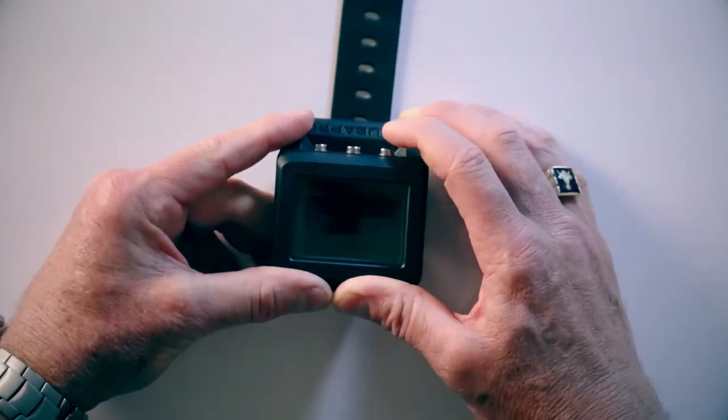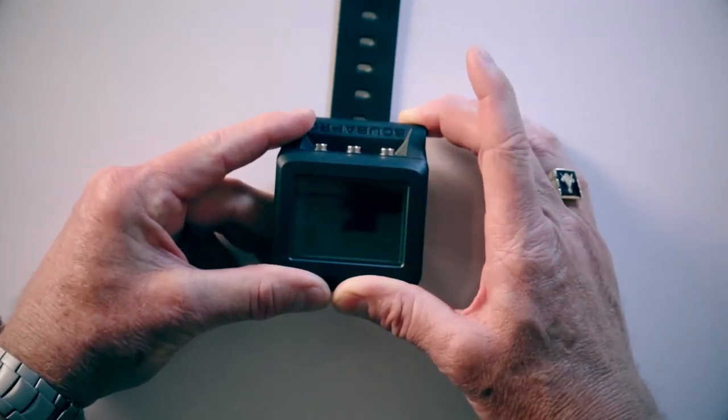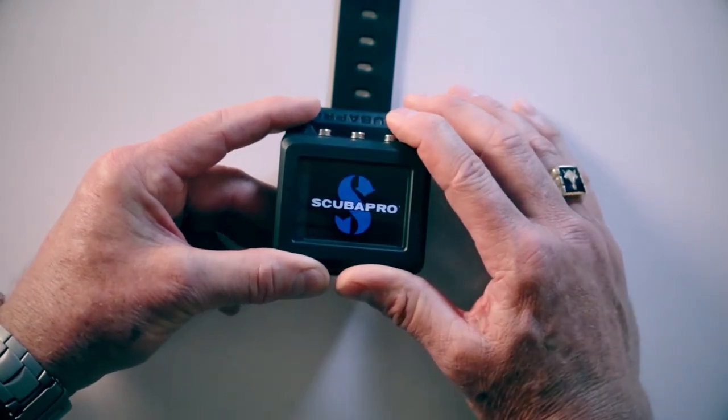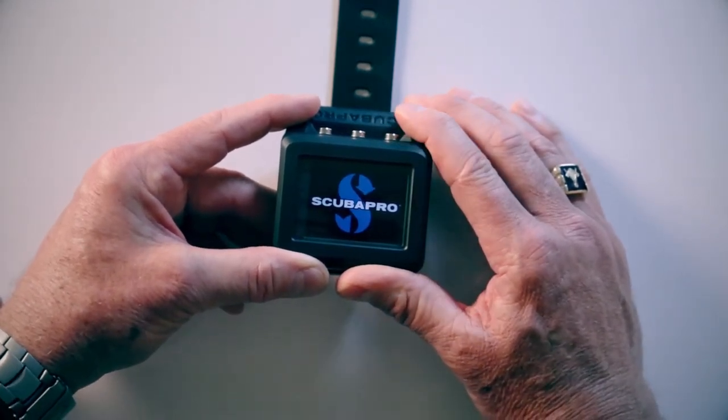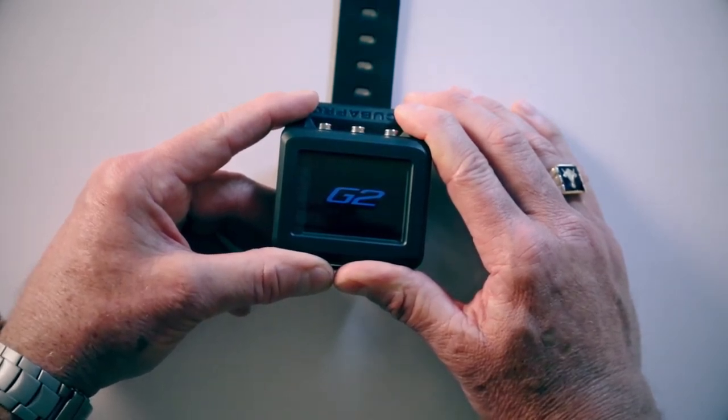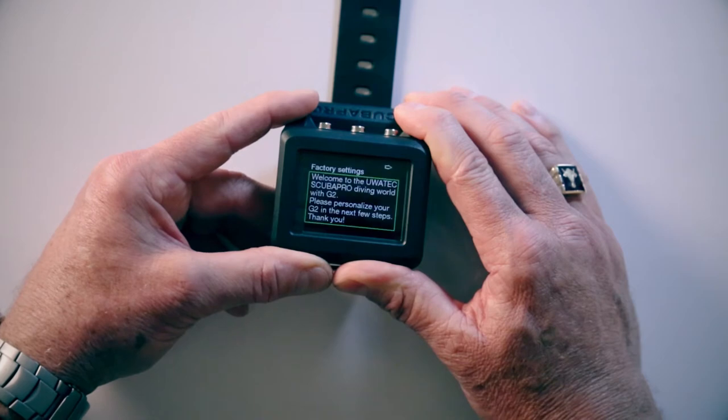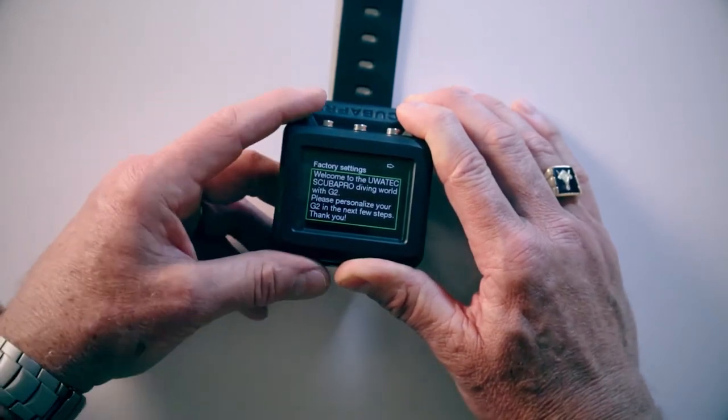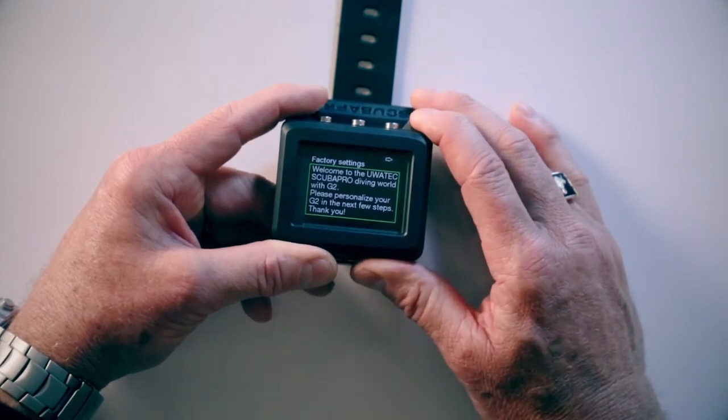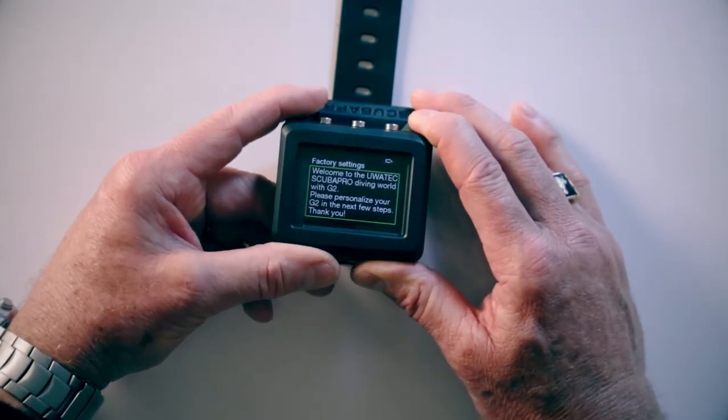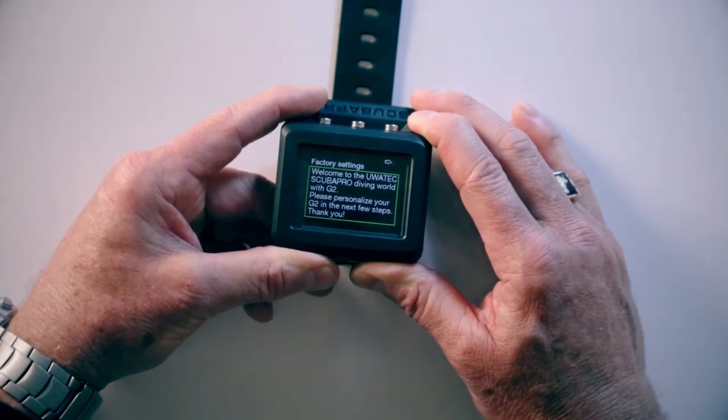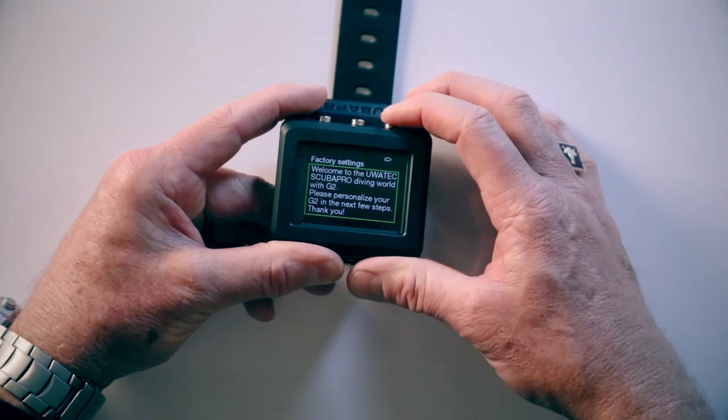We'll go ahead and walk you through the startup prompts. So when you first turn on your G2, you'll push the right button. You'll hear a little beep. It's going to show you the Scuba Pro logo. It'll show you the G2 logo. And then it's going to walk you through some settings. In this case, factory setting. You'll notice there is an arrow in the upper right corner. It says, welcome to the Uvitek Scuba Pro diving world with G2. Please personalize your G2 in the next few steps. So let's go ahead and hit our arrow.